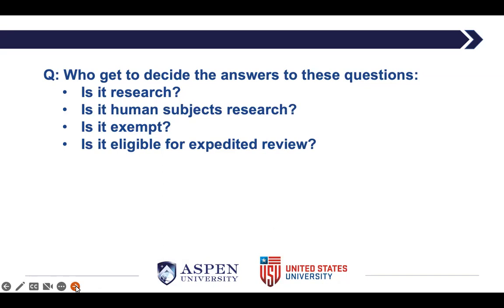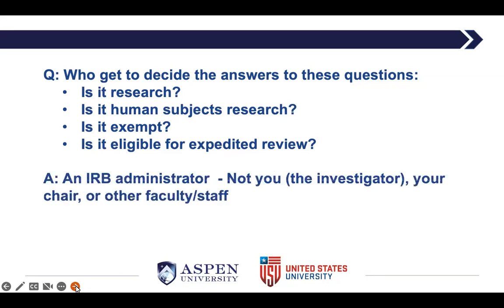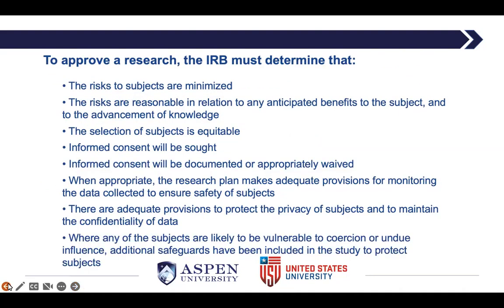Who gets to decide whether your activity is research, human subjects research, exempt, or eligible for expedited review? The answer is an IRB administrator — not you as the investigator, not your chair, not your committee members. To approve your research, the IRB must determine that risks are minimized, the risk-to-benefit ratio is reasonable, informed consent is being sought, there are plans for monitoring and protecting data privacy, and that appropriate safeguards are in place for participants.